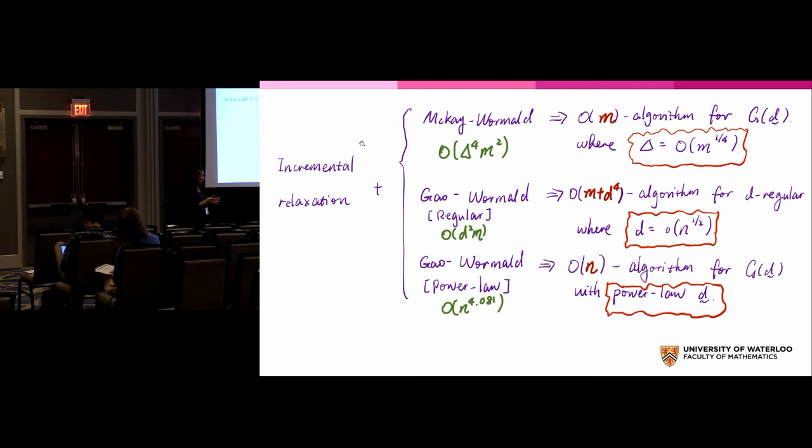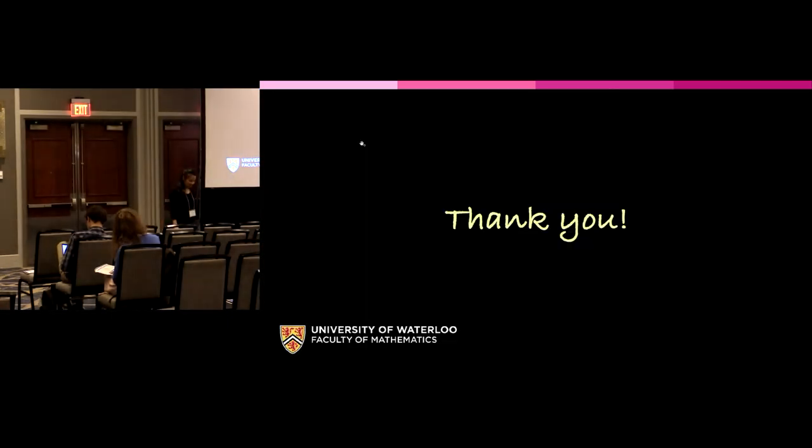You just write down the probability of g prime and then you see everything cancels and then you get a constant term. What I want to say is previously there are a bunch of algorithms that are switching method based and they use the old rejection scheme. You just replace by the new rejection scheme, you improve the running time of all of them. In principle, for instance, the power law case, the previous result was about n to the fourth and then you get to linear time now.